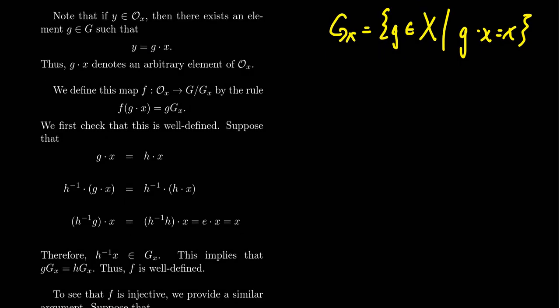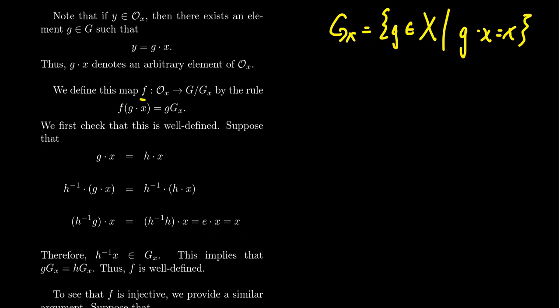We define a function from O_x to G mod G_x. Now be aware, we don't know that G_x is a normal subgroup or not. So I'm not claiming that G mod G_x is a quotient group. I'm just taking the set of left cosets, which may or may not be a group. Doesn't matter. O_x also is a subset of a set. The set X does not have any algebraic structure except that a group acts upon it.